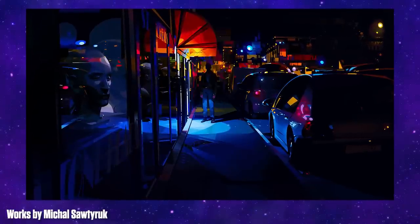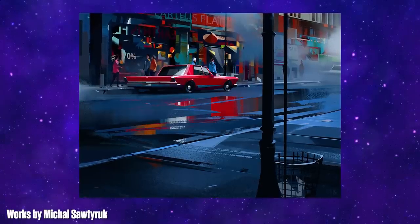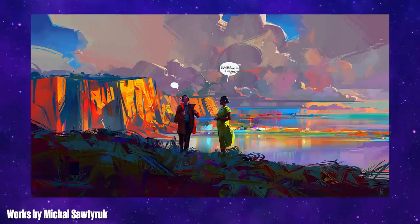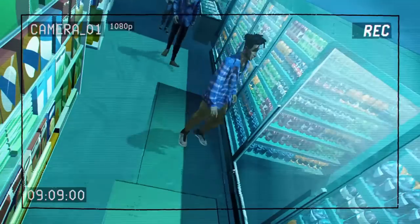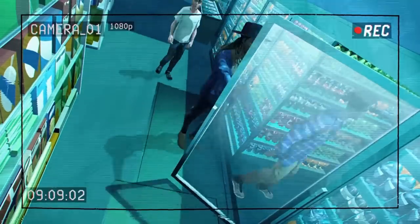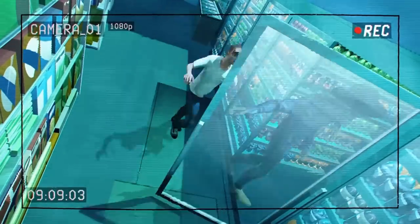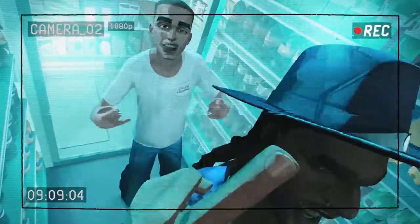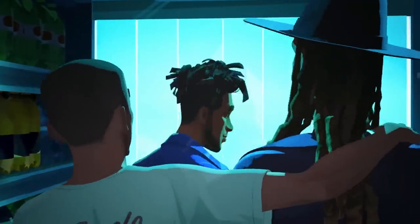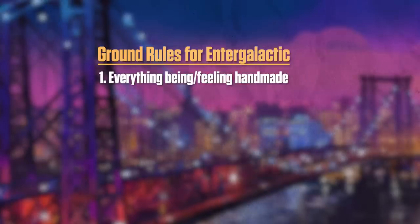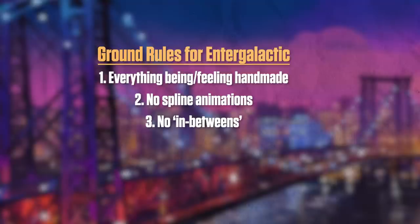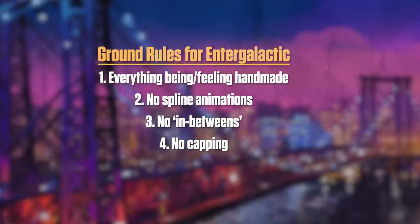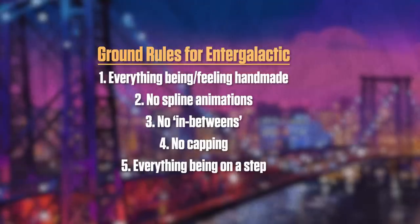Safderuk's works captured a beautiful mix of heavy and loose brush strokes, while being super saturated and having a strong sense of texture. Being aware of the growing trend of stylised animation, Fletcher Moules wanted to take Intergalactic in a fresh direction, developing some initial ground rules for the crew. Some of them included the feeling of everything being handmade, not having spline animations, no in-betweens, no capping, and everything being on a step, with every movement in the animation being a deliberate choice.